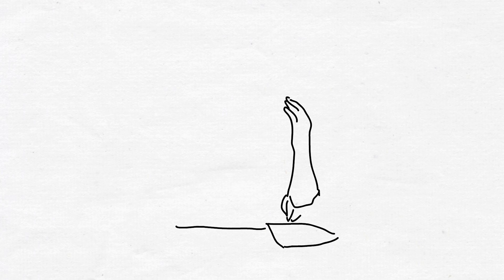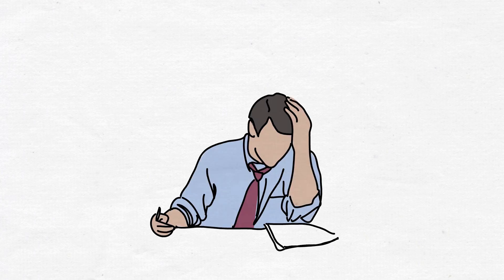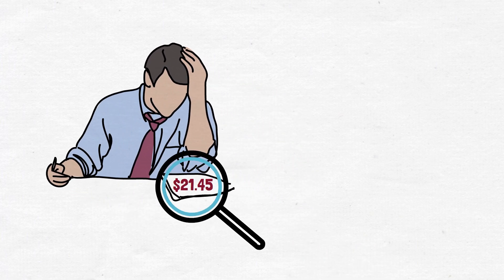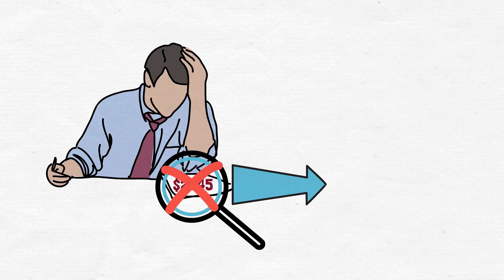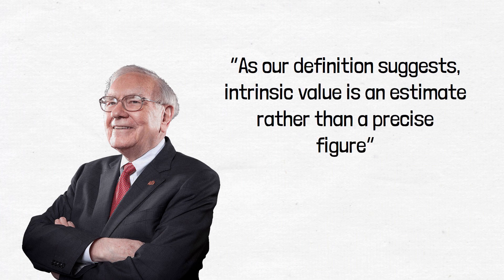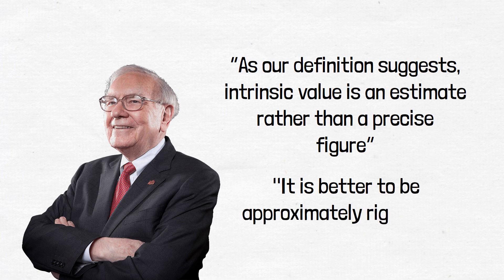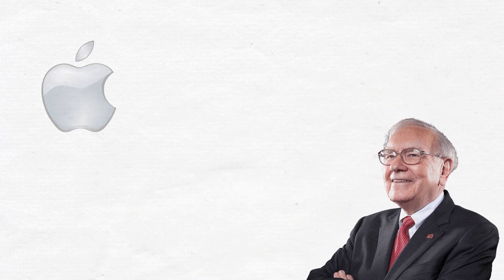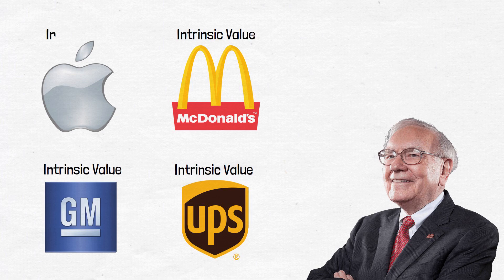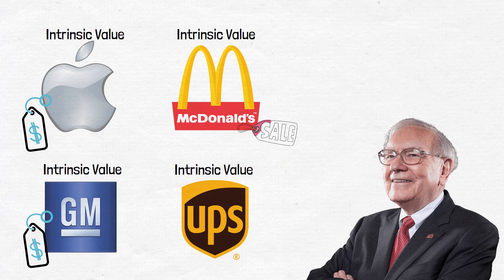An important thing to point out is that when you make intrinsic value calculations, avoid precision thinking. You shouldn't necessarily look for a precise figure on the exact value of the stock — you should be using your calculations to get an idea of what the stock is worth. As Warren Buffett says, intrinsic value is an estimate rather than a precise figure. It is better to be approximately right than precisely wrong. Make it a habit of calculating the intrinsic value of each stock you analyse, and you'll start getting a very good feel for the market and become much more skilled at identifying undervalued stocks.